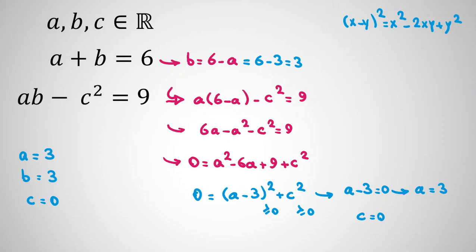Now, if we check, first equation is satisfied. A plus B equal to 6. Second equation, AB is 9 minus C squared, minus 0 squared is 9. So, we found all values of A, B, C.